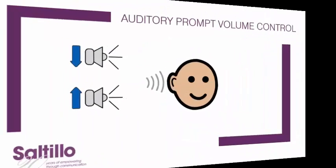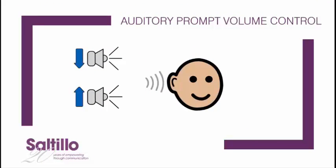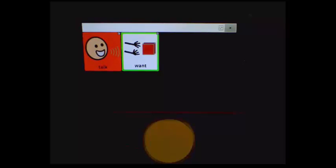The auditory prompt feature has been updated to allow individual control of auditory prompt volume, whether it is heard through the device speaker, headphones, or a pillow speaker. A prompt speaker volume may be lower or higher than the communicator's speaking volume. First, I'll demonstrate where the prompt volume and the communicator's volume are nearly the same.